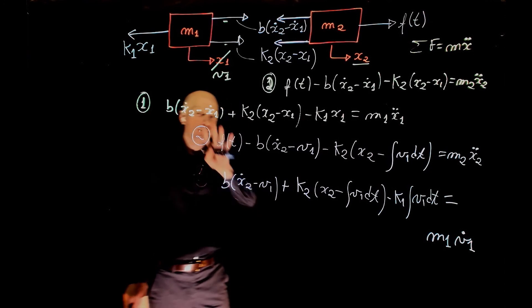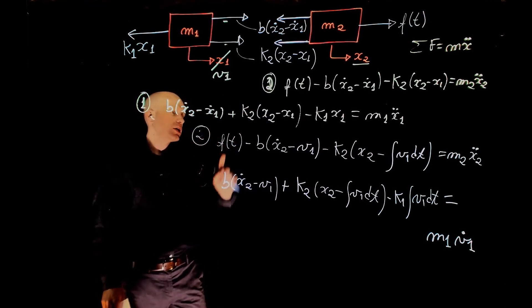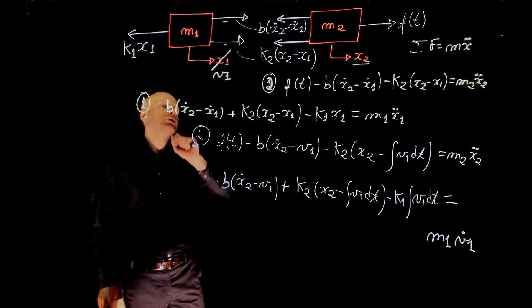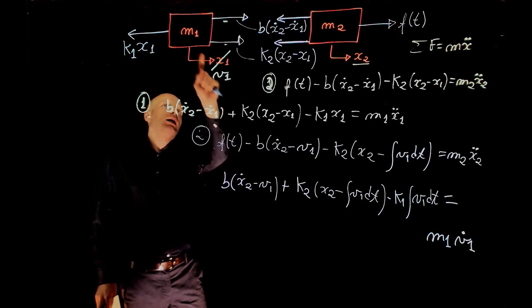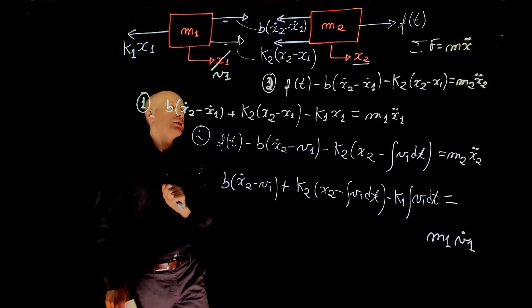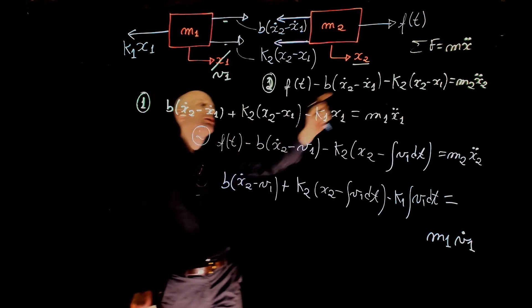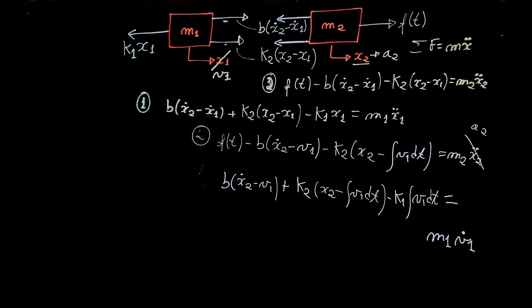And here we have the same equations, but now the new set of equations considers V1 as the variable for mass M1, so the velocity of V1, and here we have the displacement of mass M2.